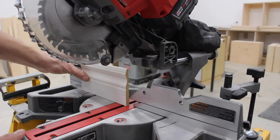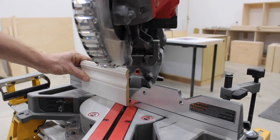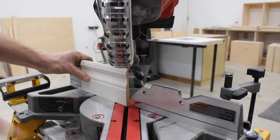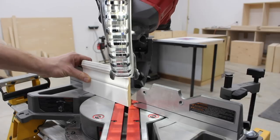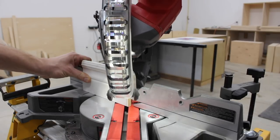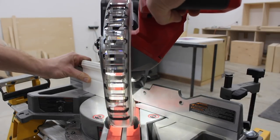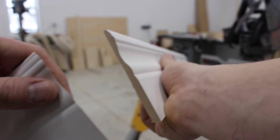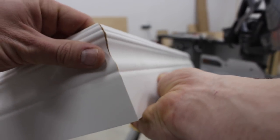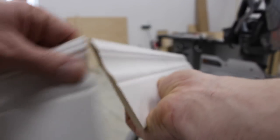Next, you want to do your opposing cut. So you move your saw over to 45 degrees and then just make that cut.